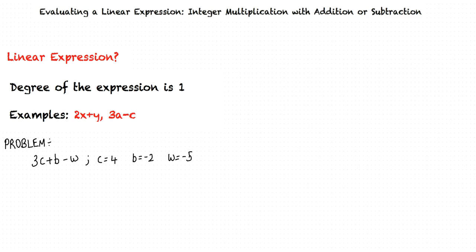Let us say we have to evaluate the linear expression 3c plus b minus w. We are given that c equals 4, b equals negative 2, and w equals negative 5. How do we proceed with the problem?